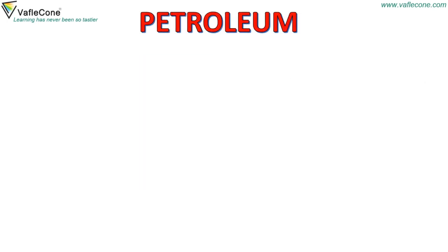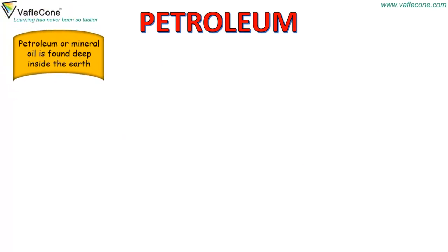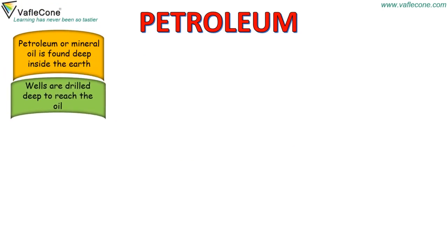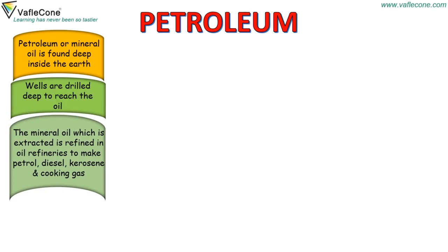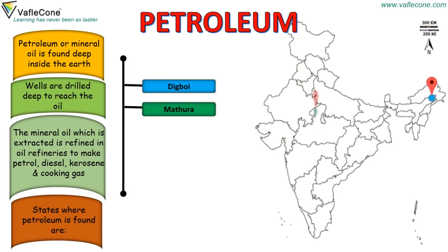Petroleum. Petroleum or mineral oil is found deep inside the earth. Wells are drilled deep to reach the oil. The mineral oil which is extracted is refined in oil refineries to make petrol, diesel, kerosene and cooking gas. States where petroleum is found include Digboi, Mathura, Burrauni and Mumbai.